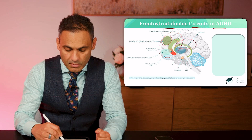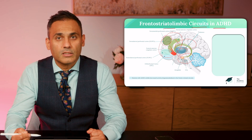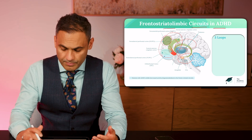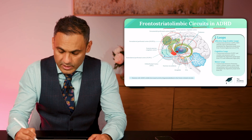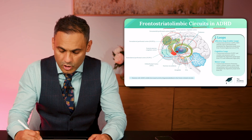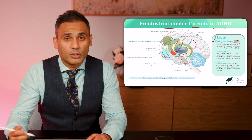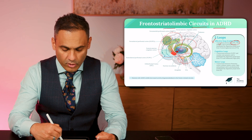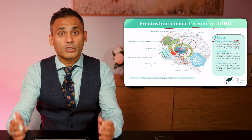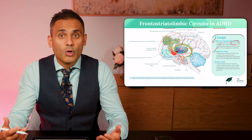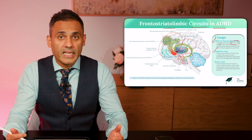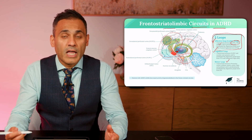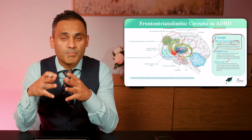The striatum and the prefrontal cortex are connected to the amygdala, the limbic pole. Essentially we have three loops: the affective loop, where connections between the nucleus accumbens and the ventromedial prefrontal cortex or orbitofrontal cortex form the limbic loop, providing top-down inhibition for emotional control; the cognitive loop, which modulates executive function in ADHD; and the motor loop. These three loops are connected, and therefore emotional regulation is part of ADHD.